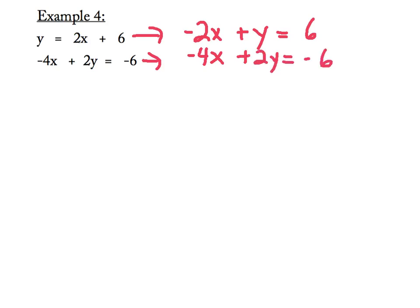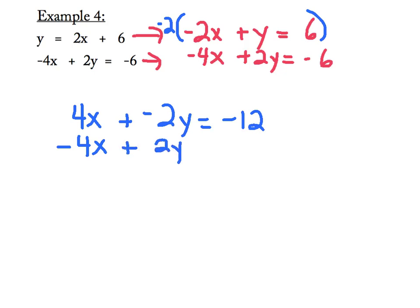Now step number 2 is to get one column of variables to be opposites, and they are not opposites. I am going to multiply that first equation by a negative 2 to create the opposites I need. Negative 2 times negative 2x gives me 4x plus negative 2y is equal to negative 12. I'm going to rewrite the second equation as is, negative 4x plus 2y equals negative 6.